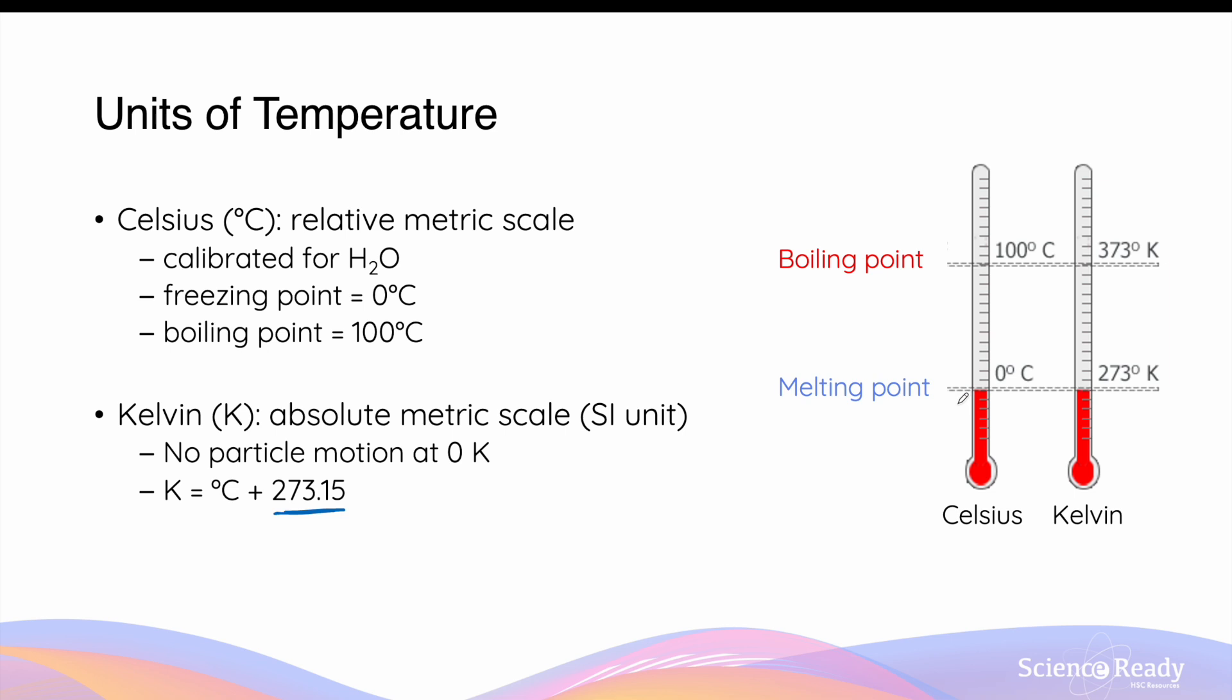For example, at 0 degrees Celsius, if we add 273, we'll get 273 Kelvins, and at 100 degrees Celsius we add the same number, we'll get 373 Kelvin.